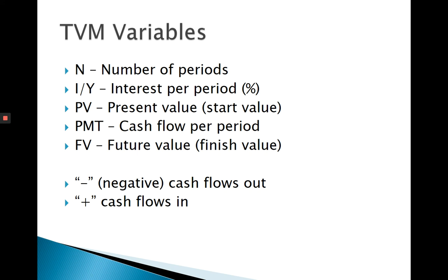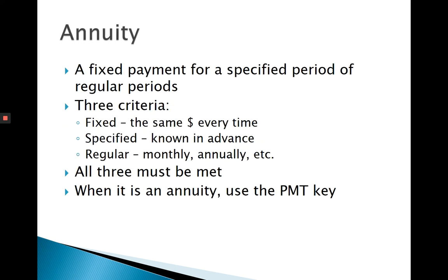Payment is your cash flow per period. In order to use the payment function it has to be an annuity — you're dealing with a fixed payment, like $500 every single time, not $500 one time and $600 another. It has to be specified and known in advance, for a defined period — not forever or an unknown period of time — and it has to be regular, such as monthly. It can't follow an irregular payment schedule. If it meets all three criteria, it's an annuity and we can use the payment key.